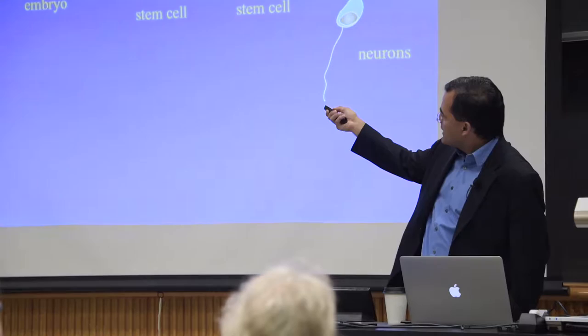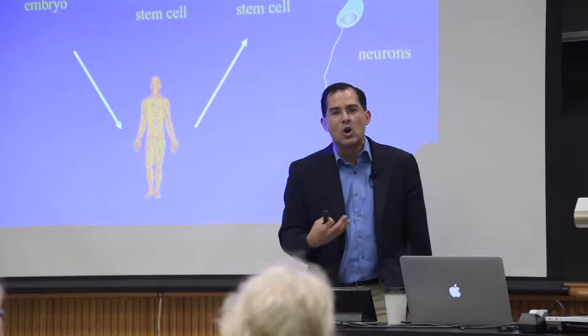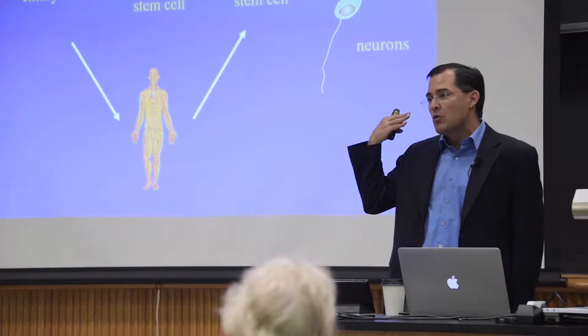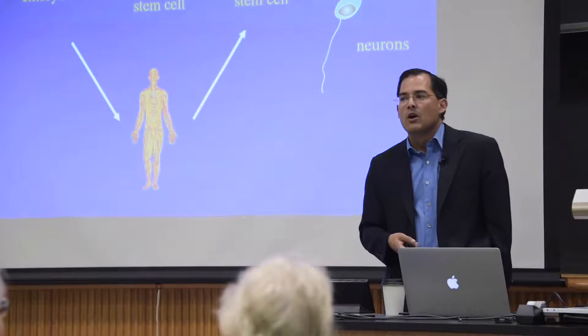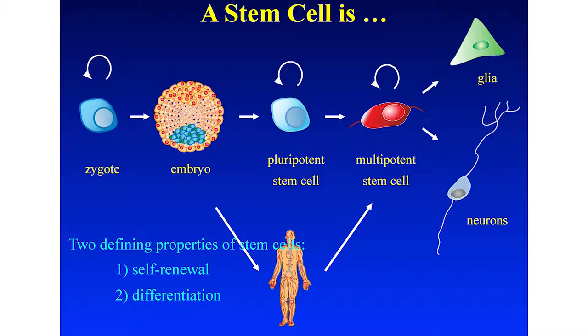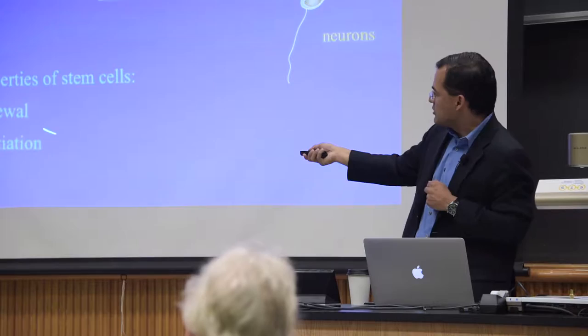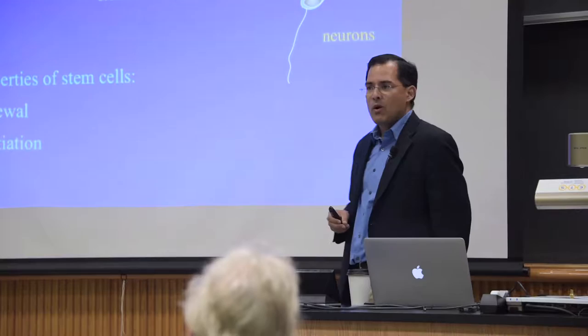A multipotent stem cell can be derived from embryonic stem cells, but also as adult organisms — if this embryo develops all the way into one of us, we retain pockets or niches of stem cells distributed throughout the body. In our bone marrow we have blood stem cells; in our skin we have skin stem cells; and as I'll be talking about today, in our brains we actually also have stem cells that continuously create new neurons throughout adult life. Regardless of where these stem cells come from, each one is defined by two properties: the ability to self-renew — divide and make more stem cells — and the ability to specialize or differentiate into specific cell types.